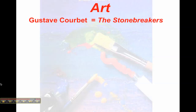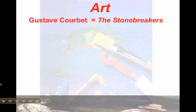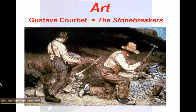Looking at art, Gustave Courbet's The Stonebreakers is a key Realist work. It depicts just a couple of people breaking down stones to build a wall — again, everyday people doing everyday things in everyday life.